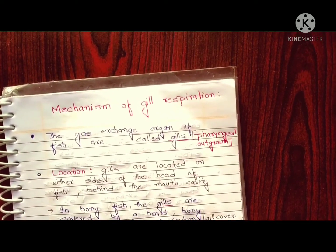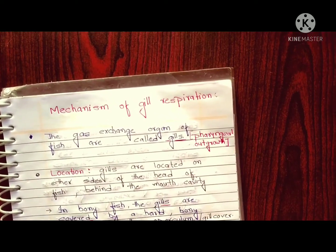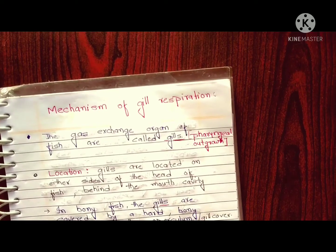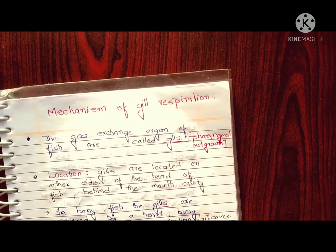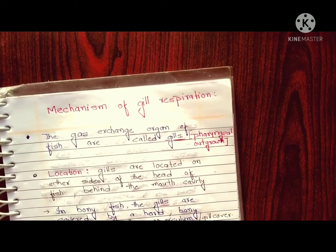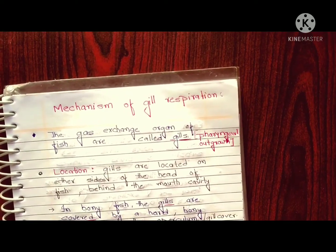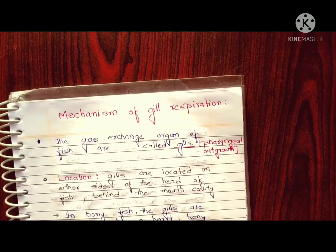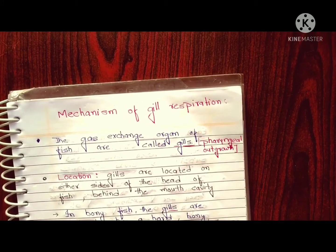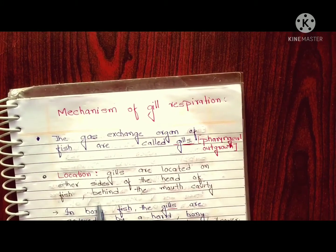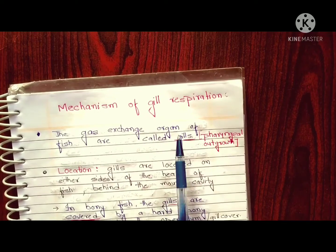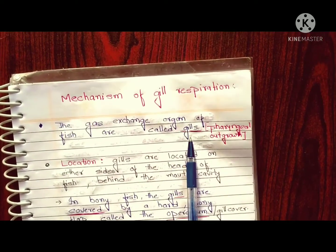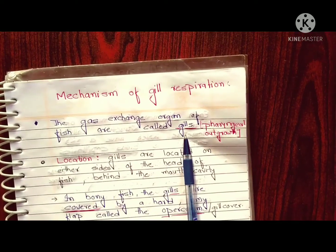What happens in human beings when we respire? We have lungs, but what happens in fish? They have gills instead of lungs. This means the gas exchange organ in fish is called gills.